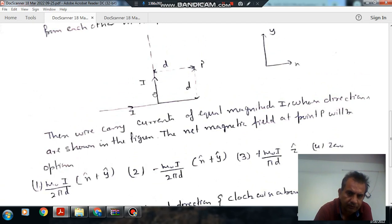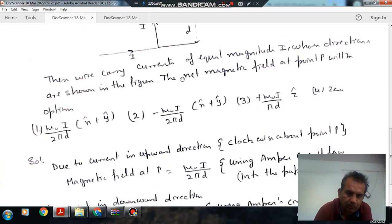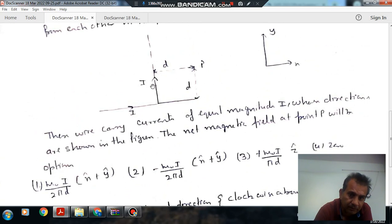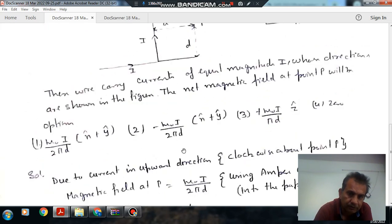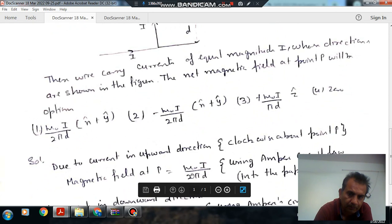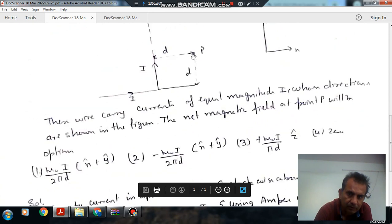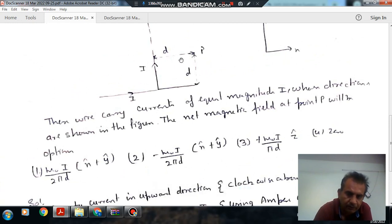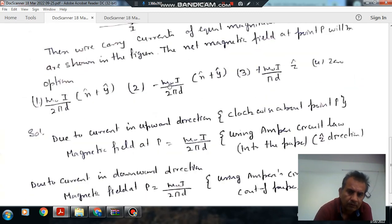So here the current I is pointing upward, here the current is pointing into the page. This current is making clockwise sense with respect to P and this current is making anticlockwise sense. The magnetic field created by this current is μ₀I/(2πD). The distance from the current to point P is D, same for both currents, but the sense is opposite.